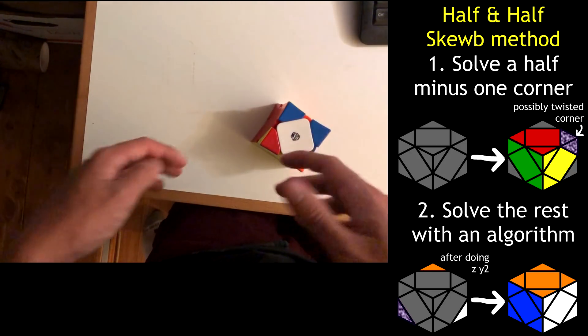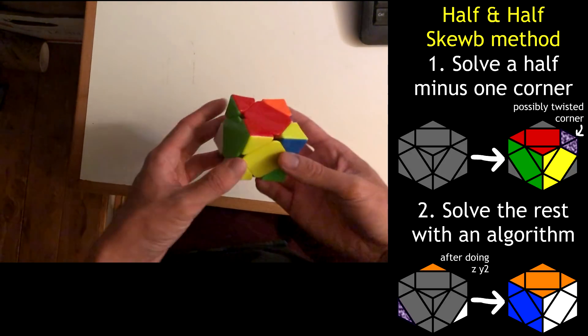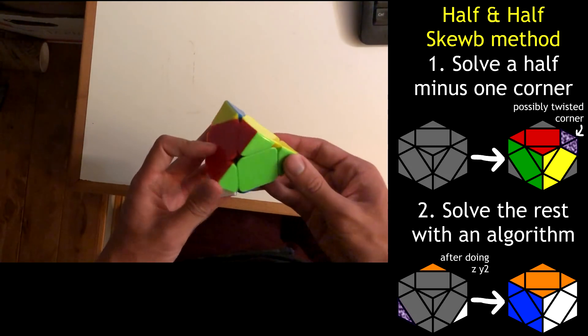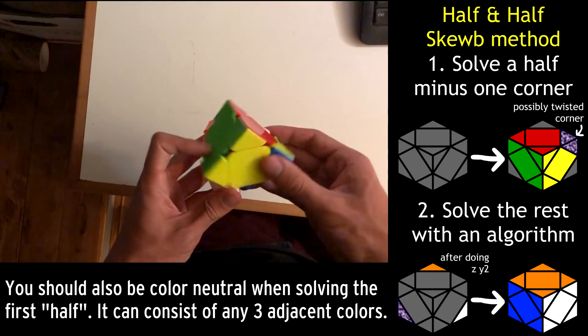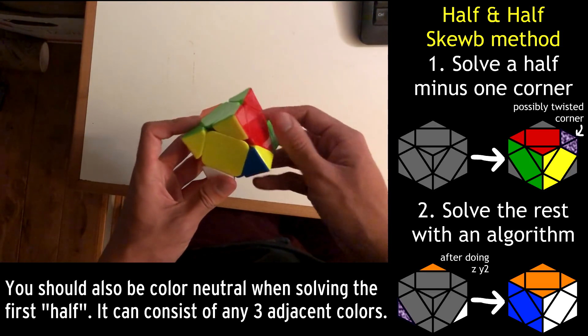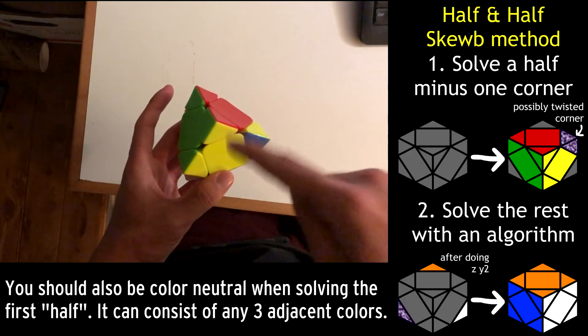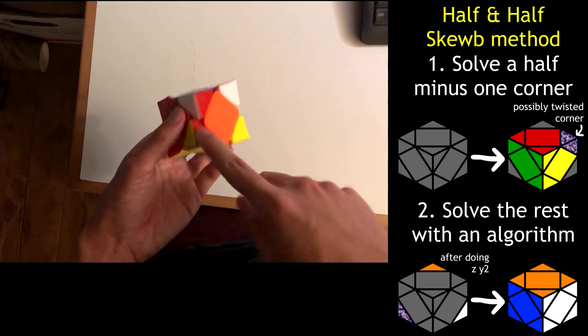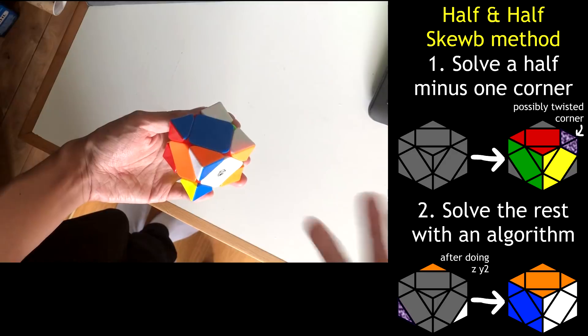Okay, so before I just do a walkthrough solve of the entire process, let me show you what you're going for. So half of a SCUBE looks like this, where what I'm turning on top is entirely solved, except for one corner.